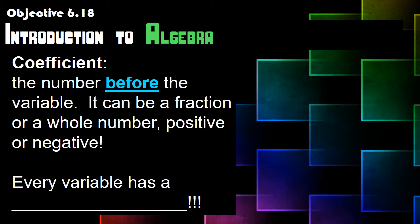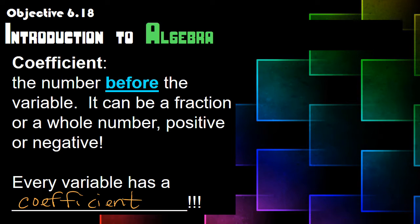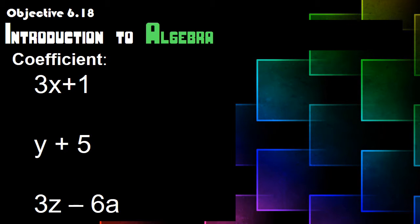So let's talk about the coefficient. This is the number before the variable. It can be a fraction, a whole number, or positive or negative. But every variable has a coefficient. All that it is, is the number before the variable — that's the key thing. The coefficient is the number that we're going to multiply the variable by, and it's usually right next to the variable.